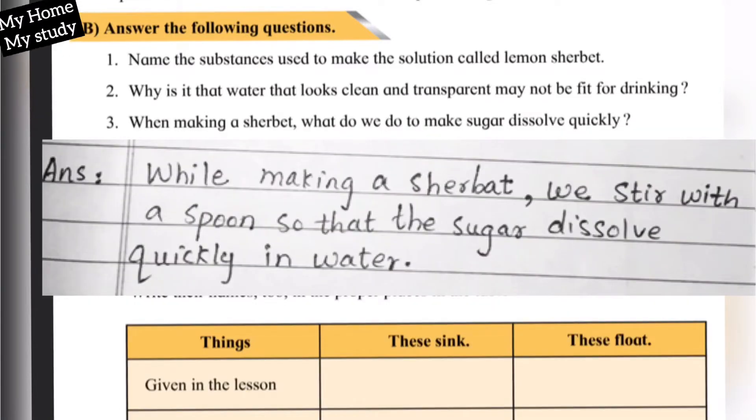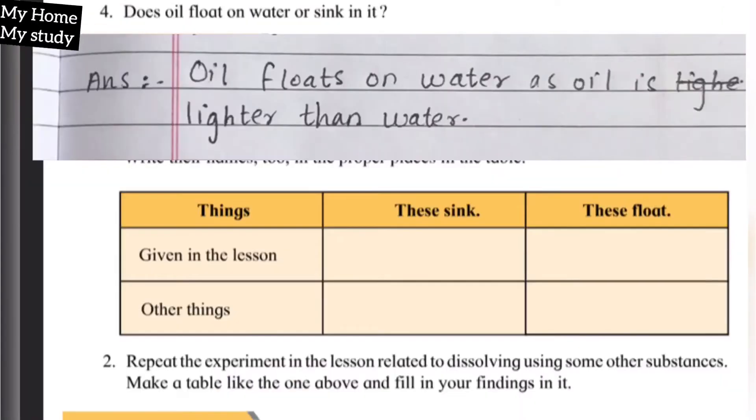Number three: When making a sherbet, what do we do to make sugar dissolve quickly? While making a sherbet, we stir with a spoon so that the sugar dissolves quickly in water. To dissolve sugar, we keep stirring with a spoon repeatedly so that the sugar dissolves.